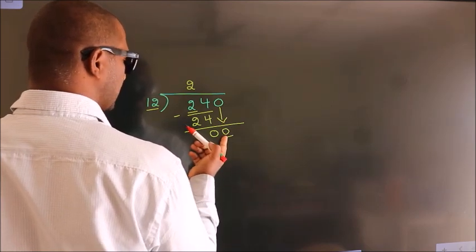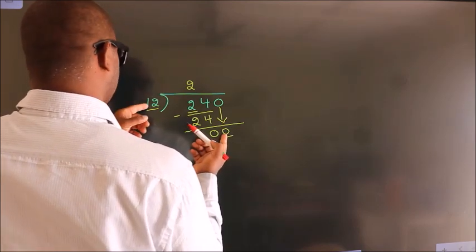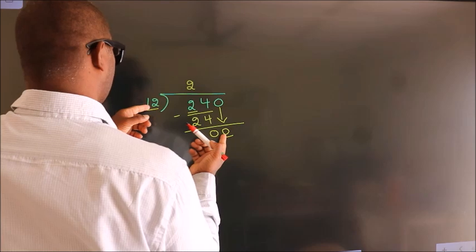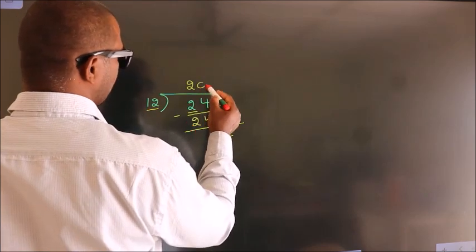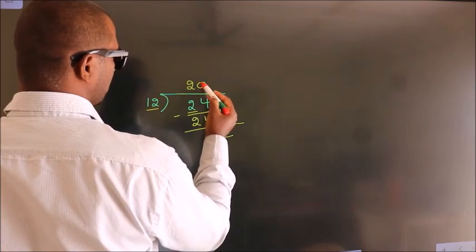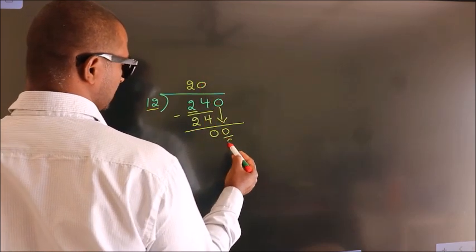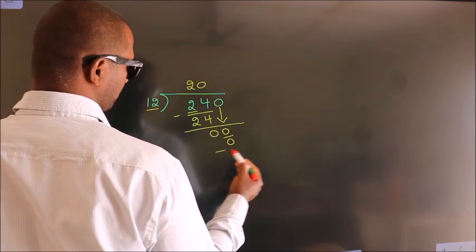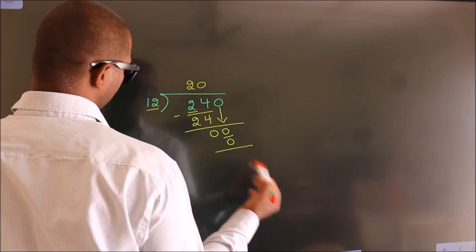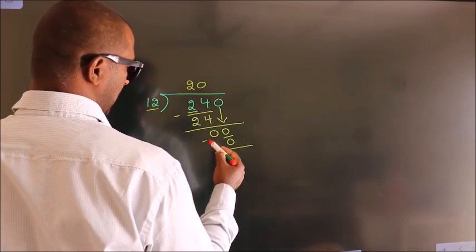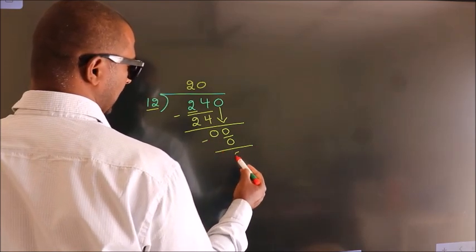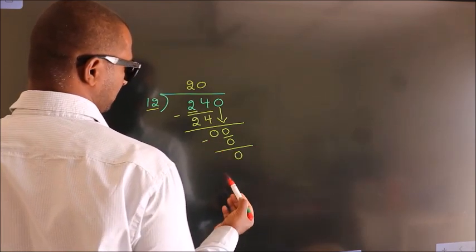When do we get 0? In the 12 table — 12 times 0 is 0. Now we subtract. We get 0.